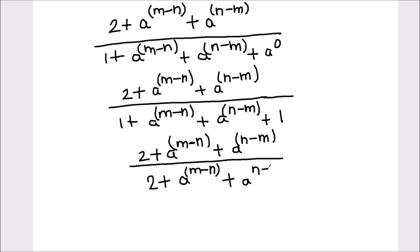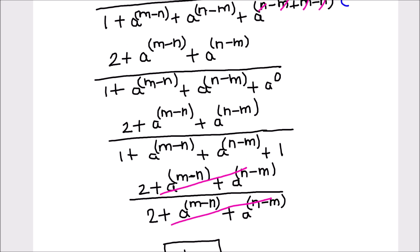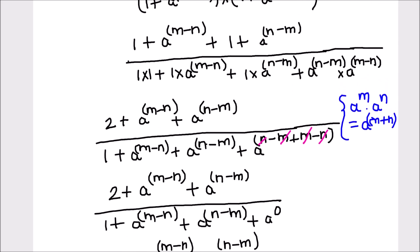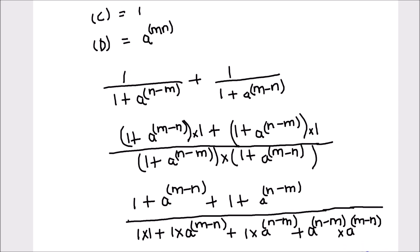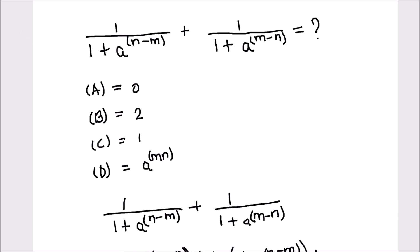Now we see that the numerator and denominator are both equal, so we cancel out all the terms. All the terms are cancelled and we have the answer as 1. This is our final answer. Let's take a look at the solution and select our correct option. Out of the four options, we have option C as our correct answer, so we will mark option C.